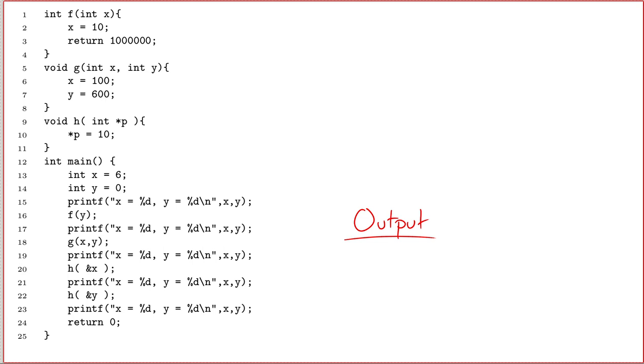So let's try tracing some code that uses pointers. And as usual, we'll start ourselves off at the beginning of main at line number 13. And we'll draw ourselves a nice scoping box for main.